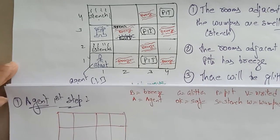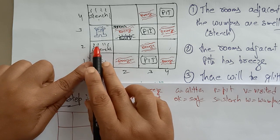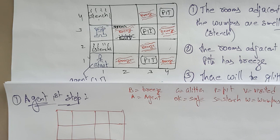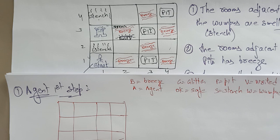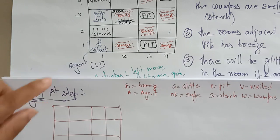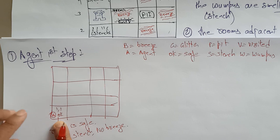Now let's see — the agent is in the first step. The agent is starting here; where does he go, either to the right side or to the left side? The first room is safe. Here 'A' represents the agent in this room. In this room there is no stench and no breeze, so room one-one is okay.